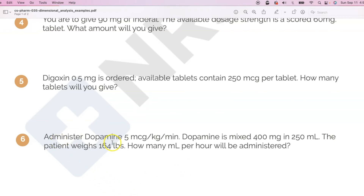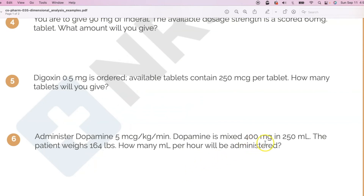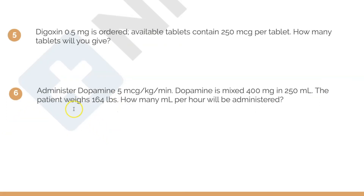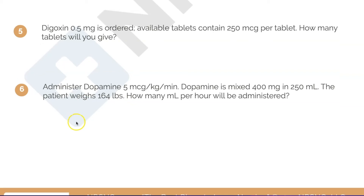The last question: administer dopamine 5 micrograms per kilogram per minute. Dopamine is mixed 400 milligrams in 250 mls. The patient weighs 164 pounds. How many milliliters per hour will be administered? We need to convert pounds to kilograms. I converted it before the problem: 164 divided by 2.2 equals 74.5 kilograms. You need to know that to get kilograms you divide pounds by 2.2.